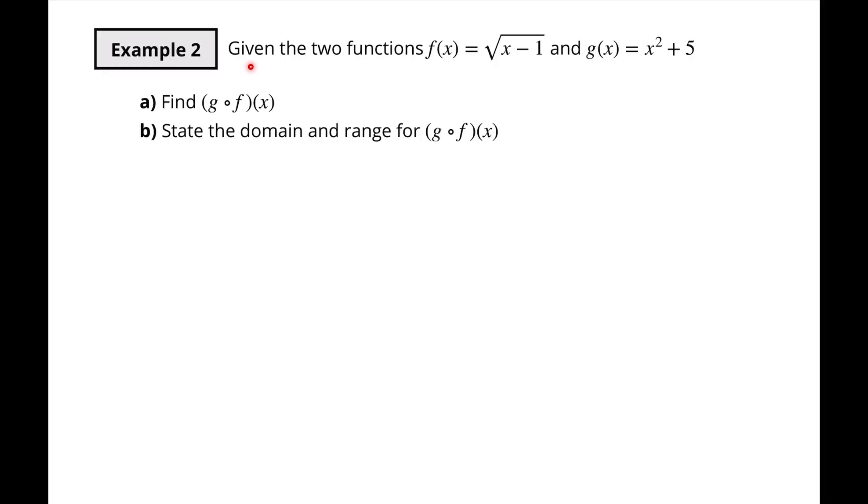Those were fairly straightforward — just taking one equation and popping it into another. Now let's get onto our next example, which is a little trickier. We have F(x) = square root of (x minus one) and G(x) = x squared plus five.